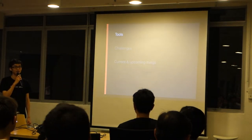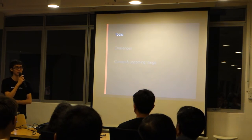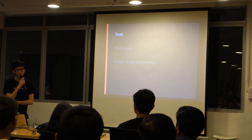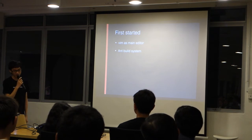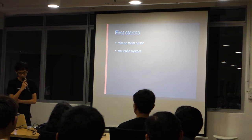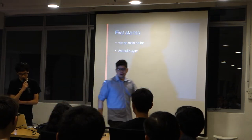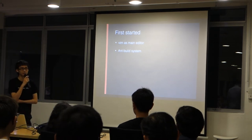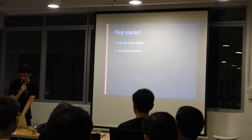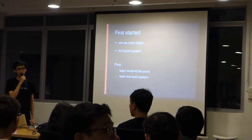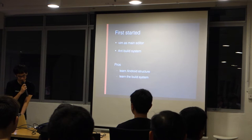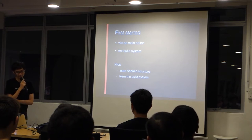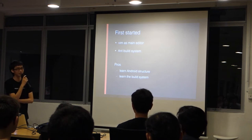The first topic will be tools, because tools are quite important for coding an Android app. When I first started, I used Beam as my main editor. Personally, I didn't really like Eclipse. I didn't know that IntelliJ was an option for Android. I also used the Ant build system instead of Maven because it was simpler. For the pros, you can learn the Android structure and how the build system works — it's okay for small projects. But when the project grew, it was quite hard to navigate around using Beam.